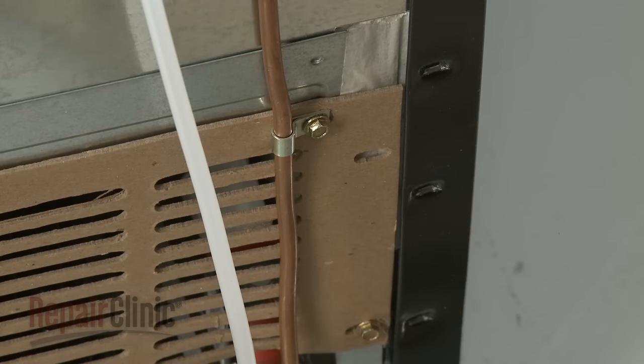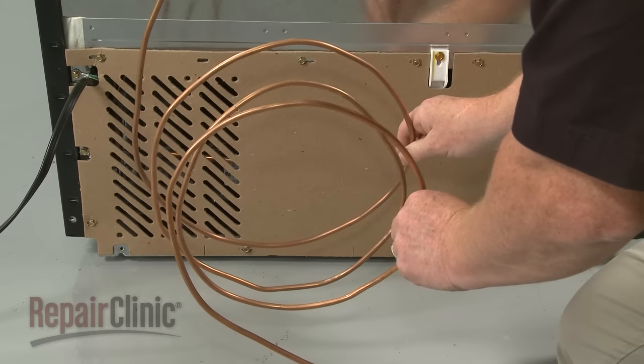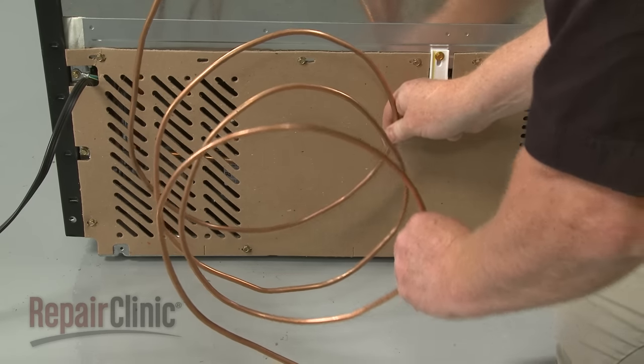The excess copper tubing should be looped, allowing it to easily fold and unfold so the refrigerator can be moved without straining the connections.